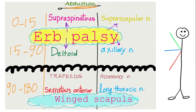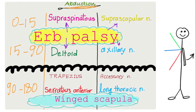Now let's discuss some diseases. First, winged scapula — a problem with the long thoracic nerve. Your scapula is hanging and the serratus anterior is not functioning. Second, we have a disease called Erb's palsy, or Erb-Duchenne palsy. You have a problem with the upper trunk of the brachial plexus, so all of these muscles are not functioning. That's why it's called Waiter's Tip or Policeman's Tip. Your arm will be hanging by your side because you cannot abduct this arm.